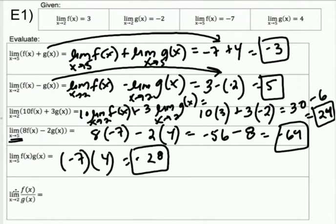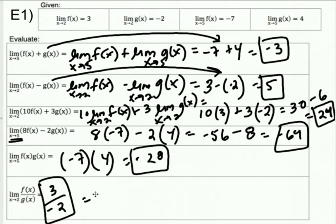And the limit as X approaches two of F over G — we're using the twos again, with F on top of G. That's three over negative two. If you want to write it as a decimal you can, but I'd suggest it's easier to leave it as a fraction.